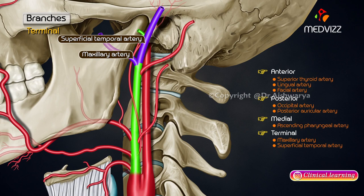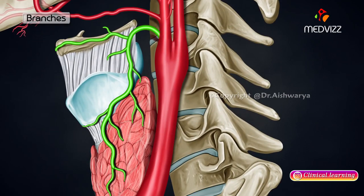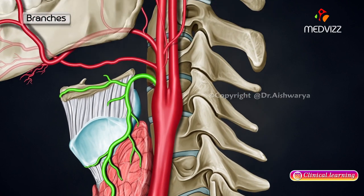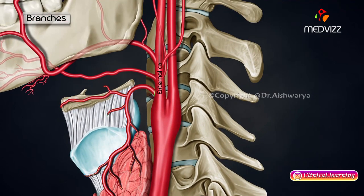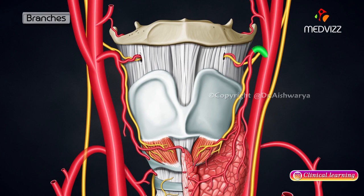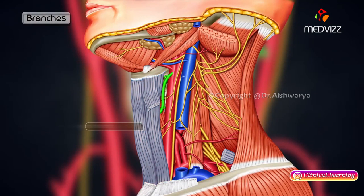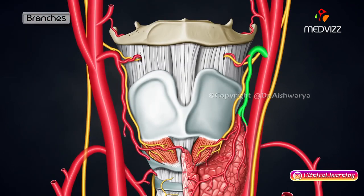The first branch is the superior thyroid artery. It arises from the external carotid artery just below the level of the greater cornua of the hyoid bone. It runs downwards and forwards, parallel and just superficial to the external laryngeal nerve, passing deep to the three long infrahyoid muscles to finally reach the upper pole of the lateral lobe of the thyroid gland.